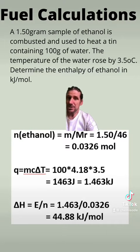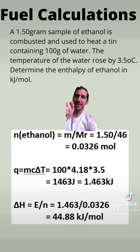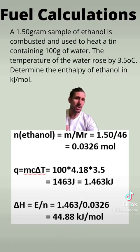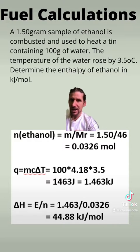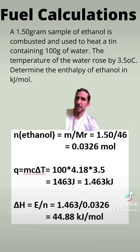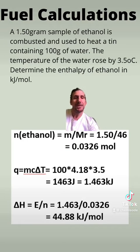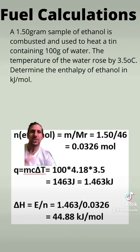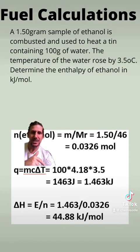The number of moles is pretty straightforward because I know the mass of my ethanol. I simply do mass over molar mass, and that gives me how many moles of ethanol I combusted. The energy, which is the kilojoules, is worked out via the temperature change of our water, using the equation Q equals MC delta T.